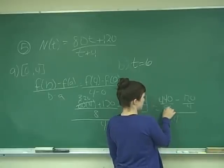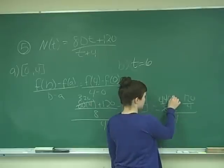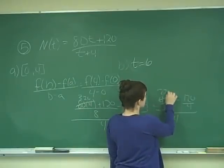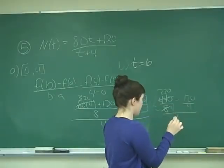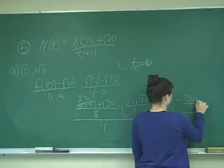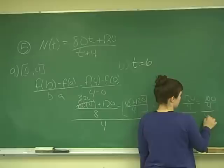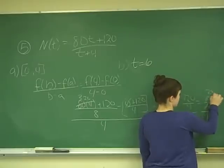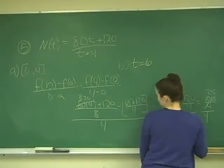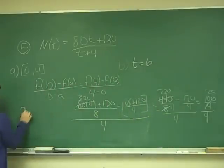So we can simplify this by dividing by 2 and get 220 over 4 minus 120 over 4, all over 4. So that gives me 100 over 4 over 4. 100 over 4 we know is 25, so our answer for this first part is 25 over 4.